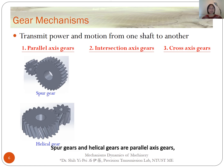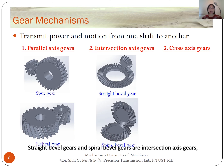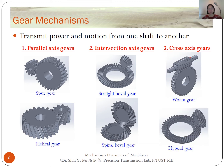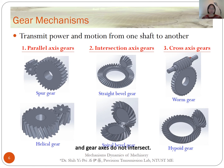For parallel axis gears, the axes of the two gear shafts are parallel to each other. Spur gears and helical gears are examples. For intersection axis gears, the axes of the two gear shafts intersect — bevel gears and spiral bevel gears fall in this category. Worm gears and hypoid gears are cross-axis gears, where the gear axes do not intersect.